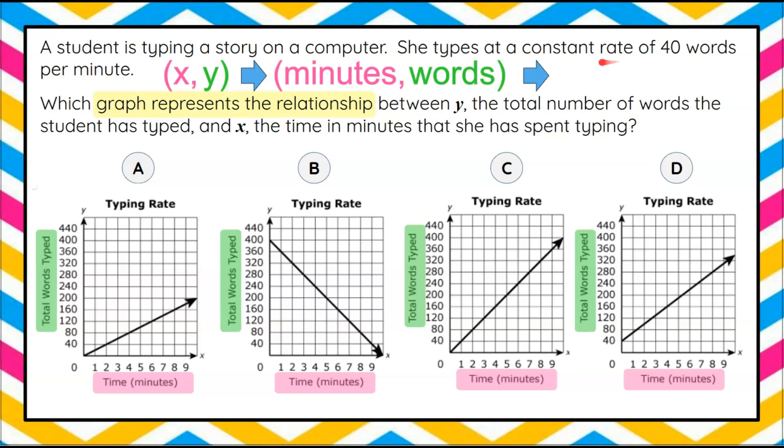They told us that she types at a constant rate of 40 words per minute. So our x, our minutes is one because it's per minute. So our x coordinate is one. And then the number of words in that one minute is 40. So that means 40 words per minute, that unit rate is represented by the ordered pair 1, 40.